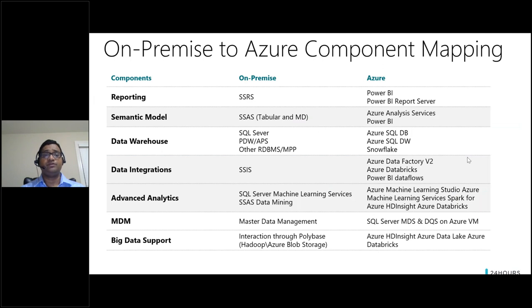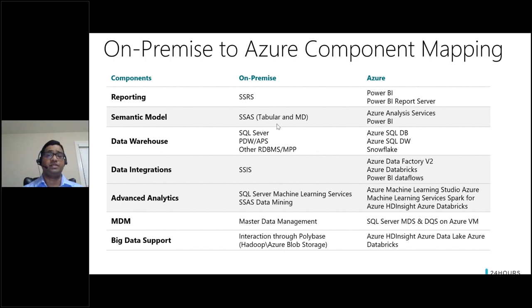If you are already using the Microsoft BI stack in your enterprise, there is good feature parity with Azure. If you're using SSRS, you can host your paginated reports either in Power BI or deploy them in Power BI Report Server. If you have a semantic model like SSAS, you can use Azure Analysis Services or Power BI — use Power BI if the size of the semantic model is not very high. For SSIS, you can use Data Factory V2, Azure Databricks, or Power BI Dataflow — the latter being more of a business ETL tool. There are also options around advanced analytics, MDM, and big data.